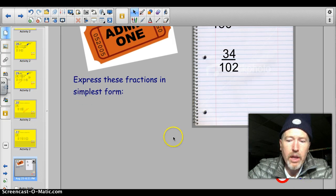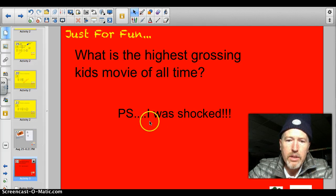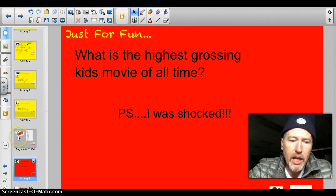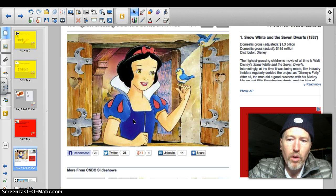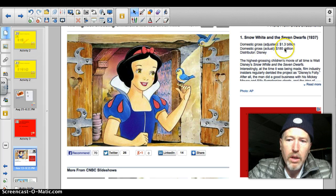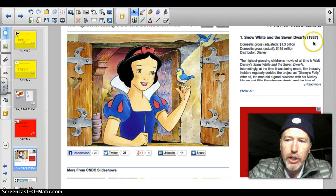All right. Are you all ready for the answer to the trivia question? See if you're as surprised as I was. All right. The highest grossing kids movie of all time? Well, let's just jump right in. The number one highest grossing movie of all time for kids was Snow White and the Seven Dwarves. At the time, it brought in $185 million, but in today's dollars, it would be $1.3 billion. Okay, I know Snow White, but check out the year. 1937. Hello? That's a long time ago.